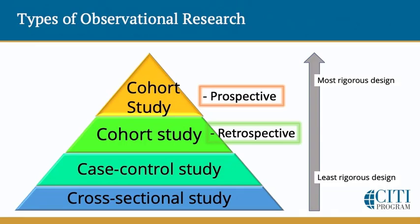Each type of study has its own specific design elements related to the timing of assessments and sampling of study subjects, as well as advantages to study conduct and the validity of research findings. The rigor of each design and its strength of evidence is indicated in this pyramid. It illustrates that the prospective cohort study is considered the most rigorous and definitive design in terms of the findings it can generate, followed by the retrospective cohort study, case control study, and cross-sectional study design. The reasons underlying the strength of evidence categorization are more fully explored in the CITI program course on observational research, so I will keep the discussion more about what an IRB reviewer should know regarding the different design types so as to effectively review an observational research protocol.